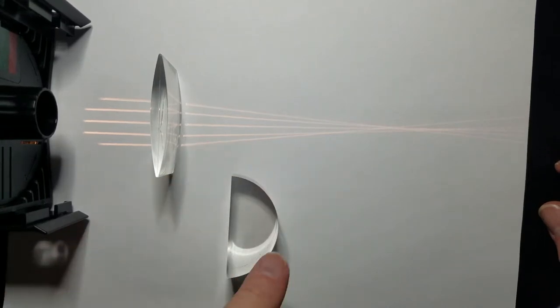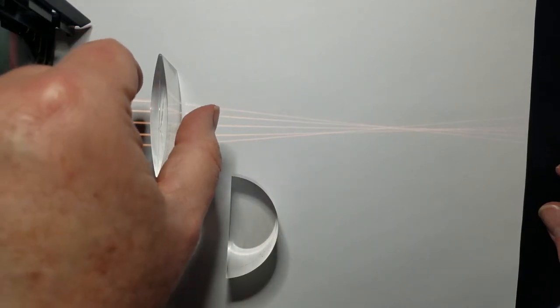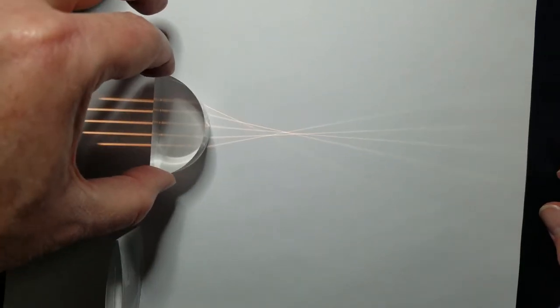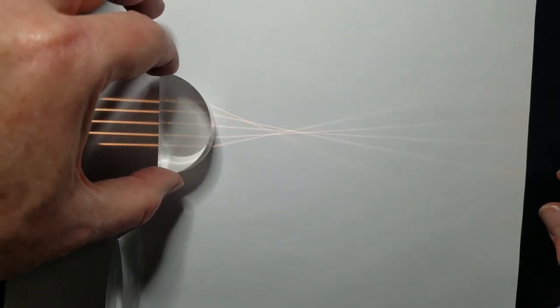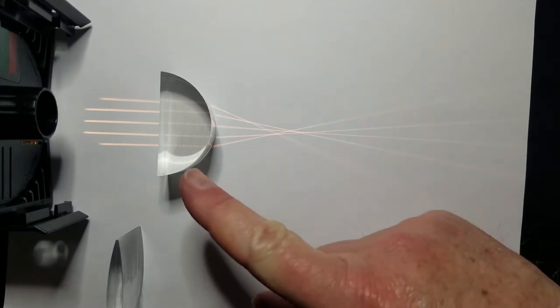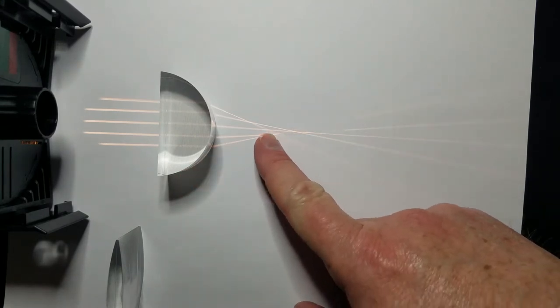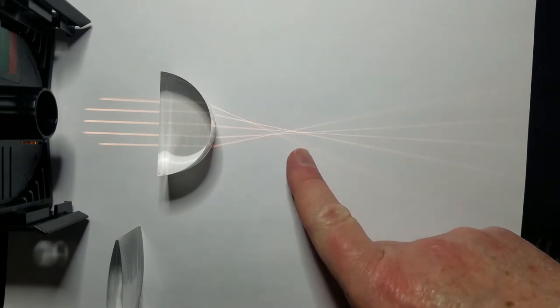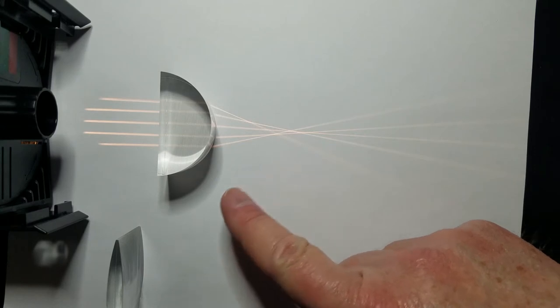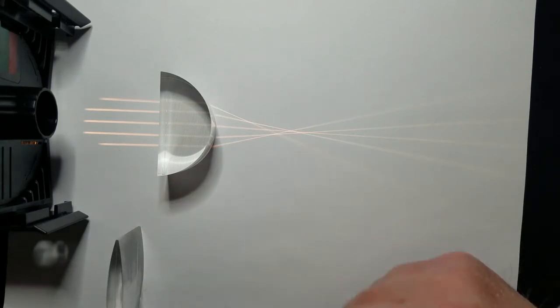This one is a planar-convex lens. So if I take this one out of the way, it should still focus the light, but now do it at a different focal point because it's a different thickness of lens. You can see we've got a little spherical aberration right there where maybe these beams of light are not all that parallel.